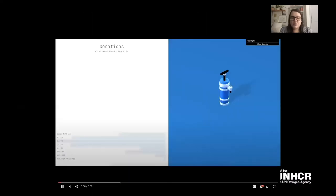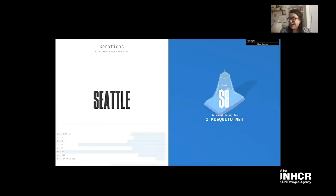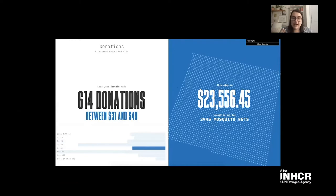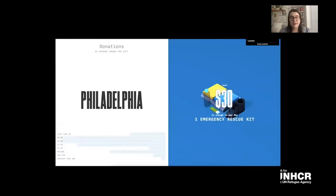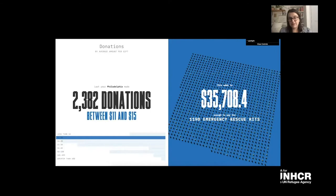Once we could understand our data, we could reach donors in new and better ways. It's really tricky for nonprofits to report on where money is going meaningfully — donors don't want to hear their dollar funded a light bulb. So we aggregated donations by city: for example, 614 donations in Seattle at a certain dollar amount, and translated that to what it could buy in a refugee camp — in that instance, almost 3,000 mosquito nets. We found this a really effective tool to better target and reach donors where they are.